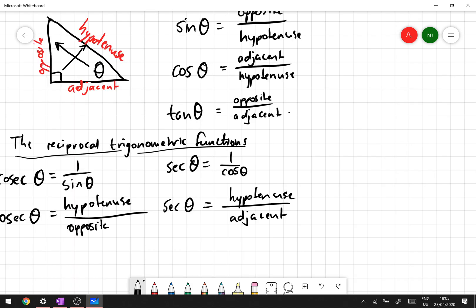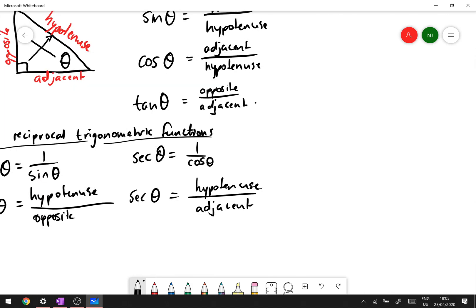And then after that we have cot, the cotangent. So cot is the reciprocal of tan, so cot is the adjacent over the opposite. Well, and so that's cot.